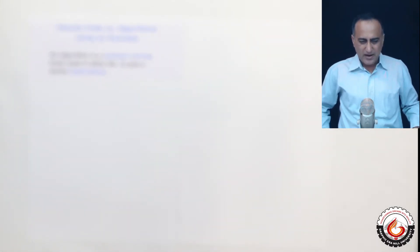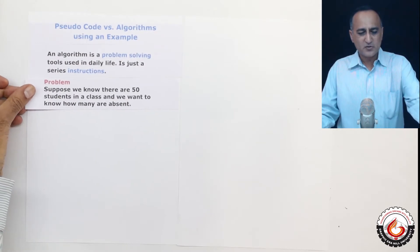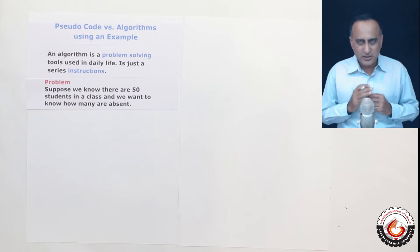Now, this is a problem I have adapted from a course called CS50 by David Malan at Harvard University. I have slightly twisted it so that you understand it better. Suppose we have 50 students in a class and we want to write the logic to find out how many students are absent.